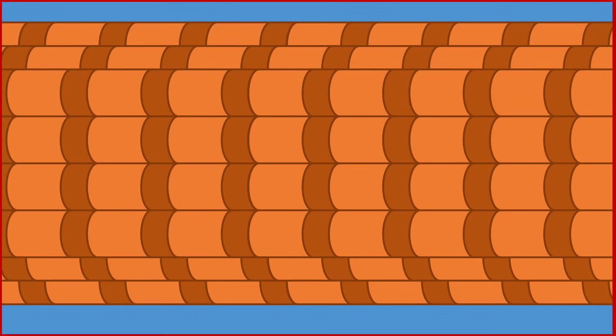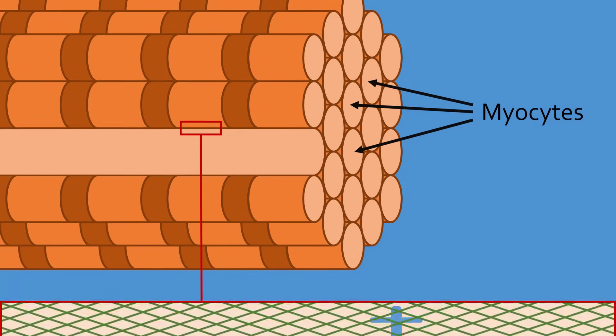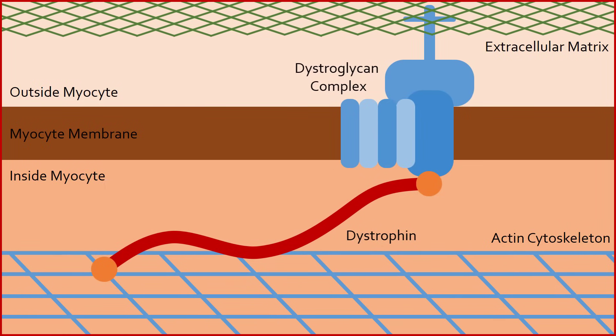All movement is controlled by contracting various muscles in our body. If we zoom into muscle, we see that it is made up of many long tubular cells called myocytes that can contract to cause flexing. An important structural protein called dystrophin is located near the membrane of myocytes. Dystrophin acts like a chain that links the skeleton of the myocyte, made of actin, to the extracellular matrix, which is a mesh-like structure outside the myocyte. This linkage prevents membrane damage when the muscle contracts.